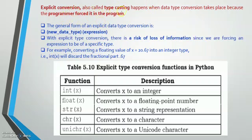Explicit conversion is also called type casting, and it happens when the data type conversion takes place because the programmer forced it in the program. We are the ones putting the change — it is not automatic. The general form is: new_data_type(expression). However, in explicit type conversion there is a risk of loss of information. For example, if it is a float 10.9 and we convert it to integer 10, the .9 is lost.